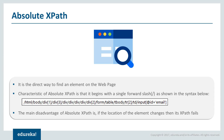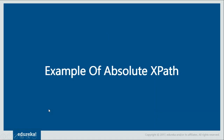The advantage of absolute XPath is that you can identify an element, but the disadvantage is that if the developer is building an application and the requirement keeps changing — as most teams follow agile methodology — and an additional tag is added in between, then this XPath will fail because the address has changed. Never go with absolute XPath when the application is not completely stable. Most of the time we don't prefer it at all.